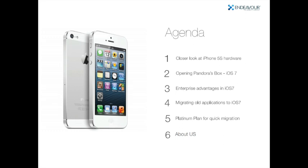Section one is a closer look at the new iPhone 5S hardware. Section two is opening Pandora's box — the iOS 7 architecture and hardware bring about some major changes. Section three covers great changes coming for the enterprise. Section four covers migrating old applications to iOS 7. Tech Endeavor has an offer called the Platinum Plan to quickly migrate your iOS 6 to iOS 7. And finally, Avinash Mishra will talk about Endeavor's years of experience in mobility consulting, mobile user interface experiences, mobile application development, and mobility integration, especially in enterprise environments.